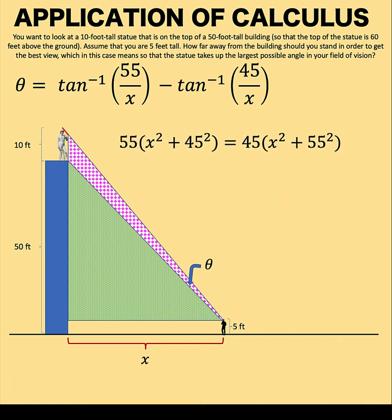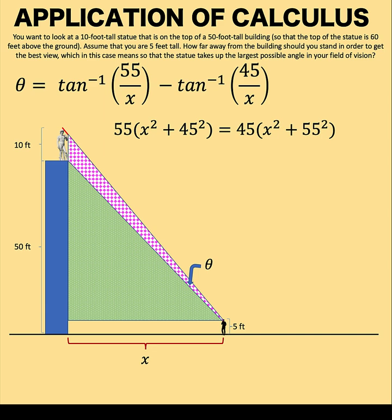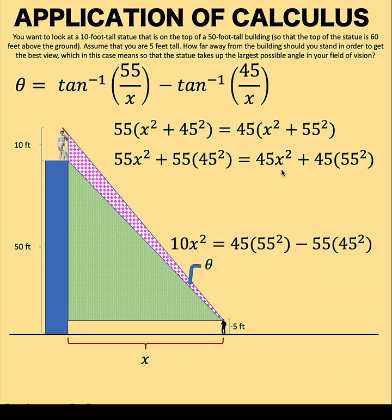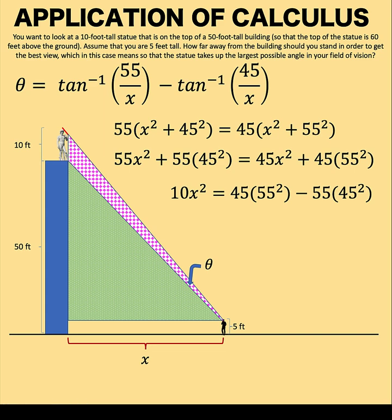And simplifying further, we distribute 55 at the left side and distribute 45 at the right side to arrive at this equation. 55x squared minus 45x squared is 10x squared. And subtracting 55 times 45 squared to both sides of the equation, here is the result. And simplifying further, we arrive at x squared equals 2475 or x is equal to plus or minus 15 square root of 11.